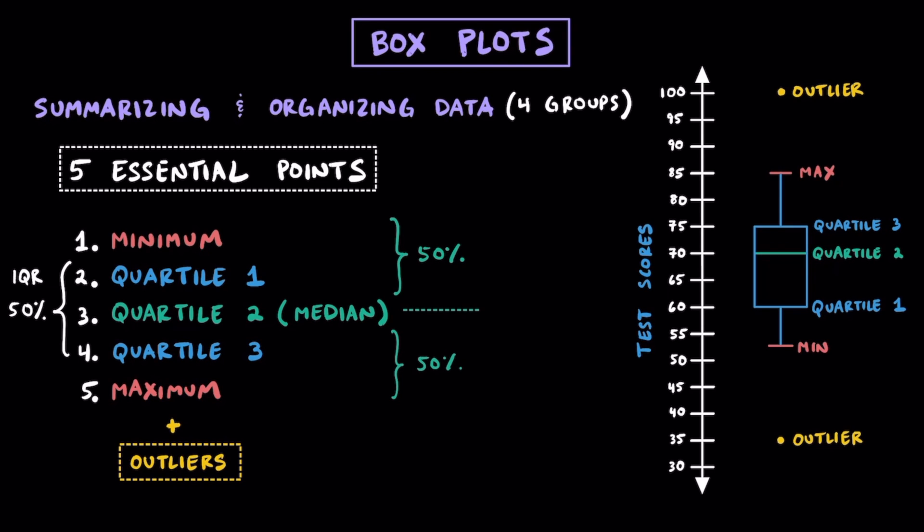Imagine that an entire class of sixth graders takes a test and the summary, or the five essential points, of all of their test scores are shown here. Here's an example of one that's drawn vertically, but we can also draw them horizontally as well.